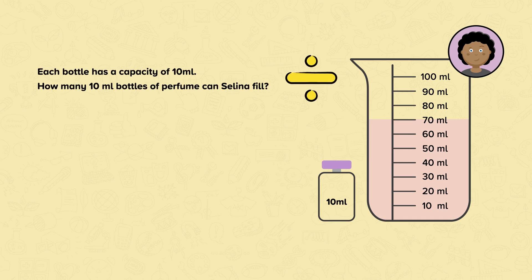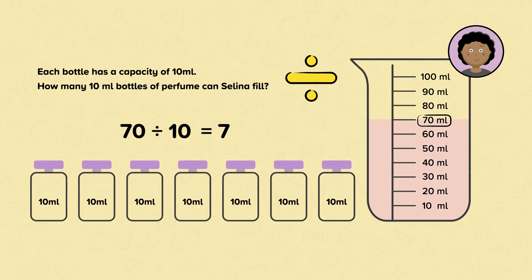For this calculation we need to use division. First let's see how many milliliters of perfume Selina has made. Selina has made 70 milliliters of perfume. Each bottle has a capacity of 10 milliliters. So we must divide 70 by 10. 70 divided by 10 equals 7. So Selina's perfume will fill 7 bottles.